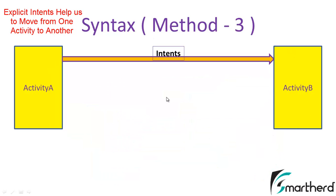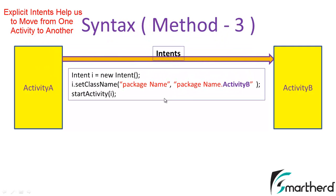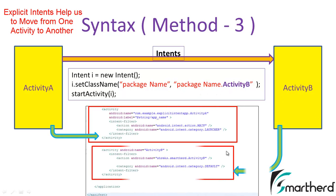Now let's look at method 3. The syntax is: Intent i = new Intent(), then i.setClassName(packageName, packageName + ".ActivityB"). The first parameter is the package name of our application and the second parameter is packageName.ActivityB, which specifically tells the system to start activity B — it is the path to activity B. In that case the manifest will look as shown. That covers the syntax and basics of explicit intents.